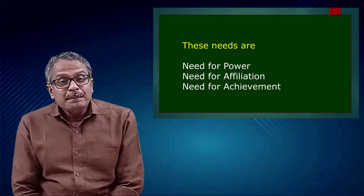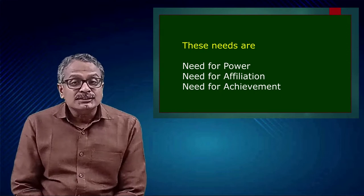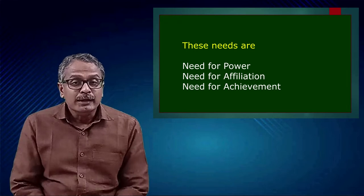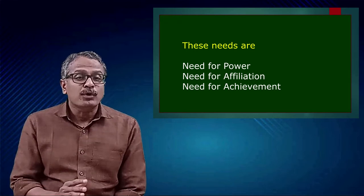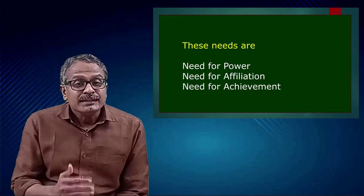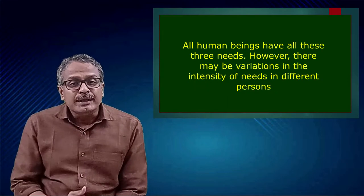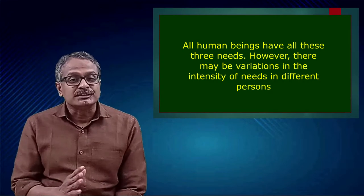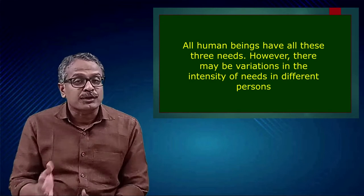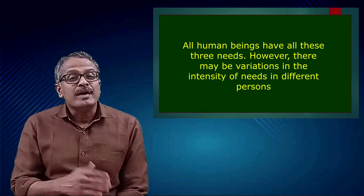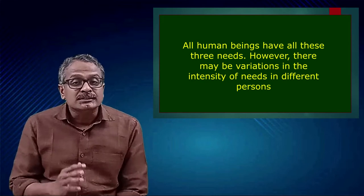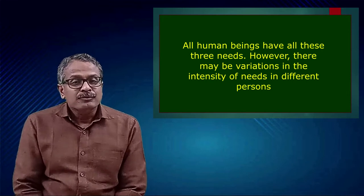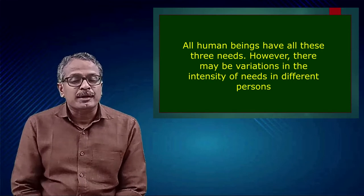Three needs theory categorizes human needs into three: need for power, need for affiliation, and need for achievement. The theory says that all human beings have all these three needs. However, there may be variations in the intensity of needs in different persons. These variations mainly occur due to differences in nature, culture, and social environments.